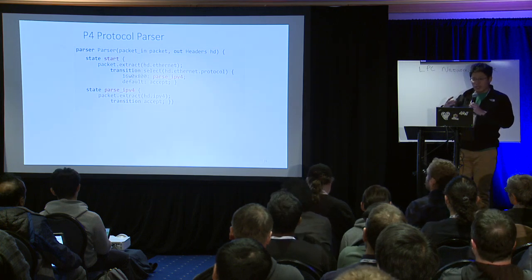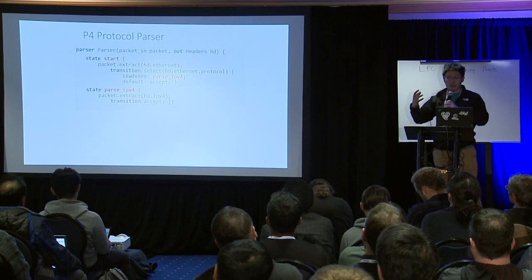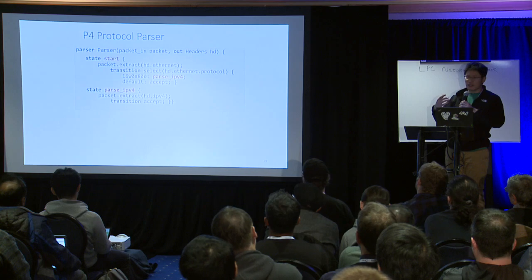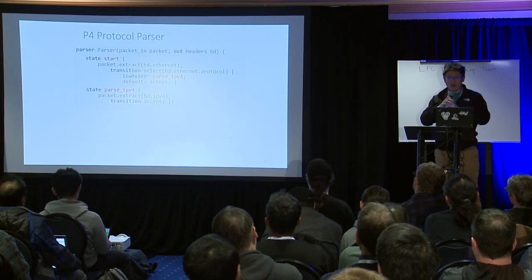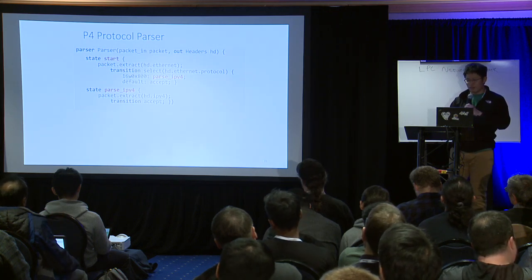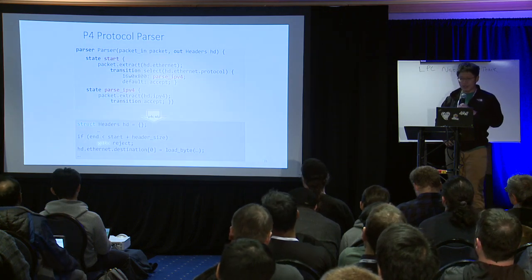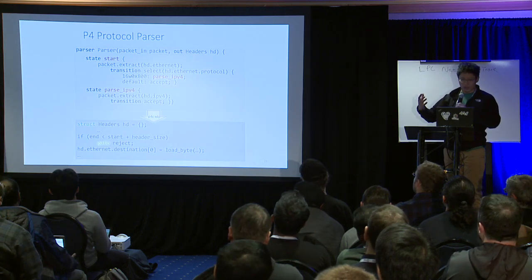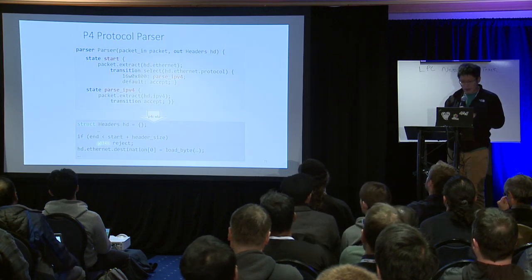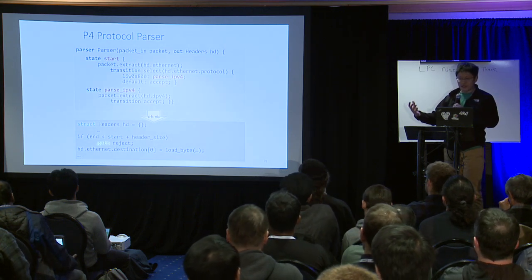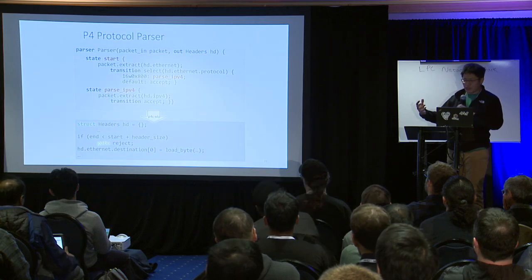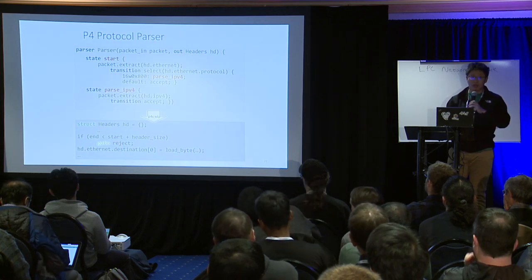Users write the P4 program by first specifying the protocols of interest — in our case, Ethernet and IPv4 headers. The P4C XDP compiler then generates the corresponding C structure. For the parser, you write a state machine: from the start state, we extract the Ethernet header, and based on the protocol number — in this case IPv4 — it goes to the next state. We convert this P4 parser code into a C-like program that later compiles to eBPF, with a struct headers containing both Ethernet and IPv4 headers.